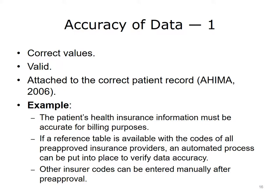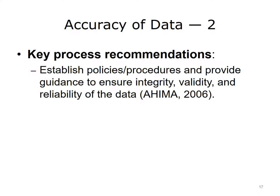During the registration process, insurance information must be gathered and validated. You as an HIT professional can assist in improving the data quality in this process. By working with business office personnel, you can establish a process to develop and maintain a reference table with codes for all approved insurance providers. An automated process can be instituted to verify the accuracy of the insurance information by limiting entry to only those codes that are available in a drop-down menu that is linked to the reference table. Entry of any other data would require a process of verification and pre-approval for any manual entries. A key process recommendation is to collaborate with users of the data to establish a policy or process to identify how data used in EHRs are generated and how data content will be determined and standardized.